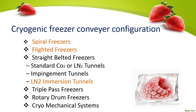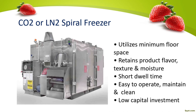Cryogenic freezer conveyor configurations include spiral freezers, flighted freezers, tread belted freezers, tandem carbon dioxide or liquid nitrogen tunnels, in-line tunnels, liquid nitrogen immersion tunnels, triple-pass freezers, tumbling drum freezers, and cryo-mechanical systems.